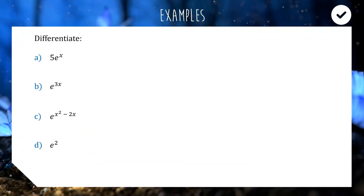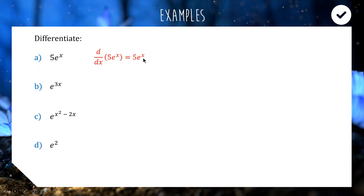The first one is 5e to the x. Differentiating e to the x doesn't change it, and the same is true for the derivative of 5e to the x with respect to x. This is actually going to stay the exact same — it's still 5e to the x. It doesn't matter if there's a constant at the front; the derivative is the same as the original function.